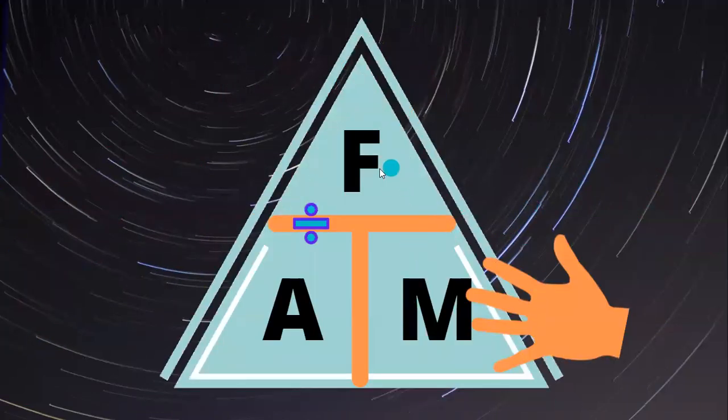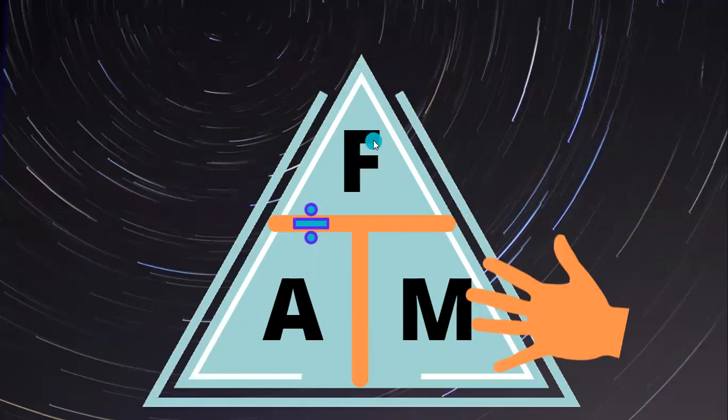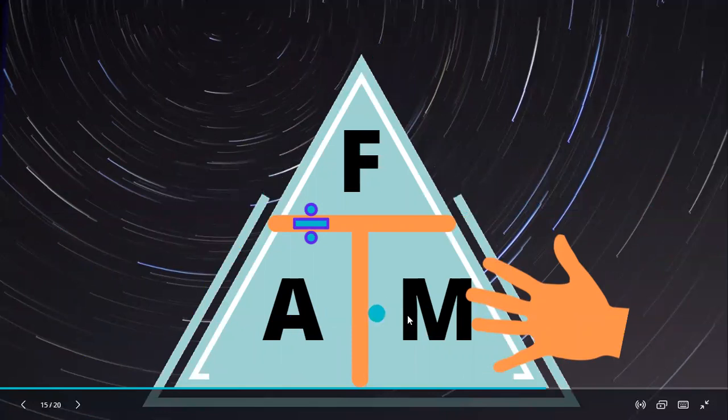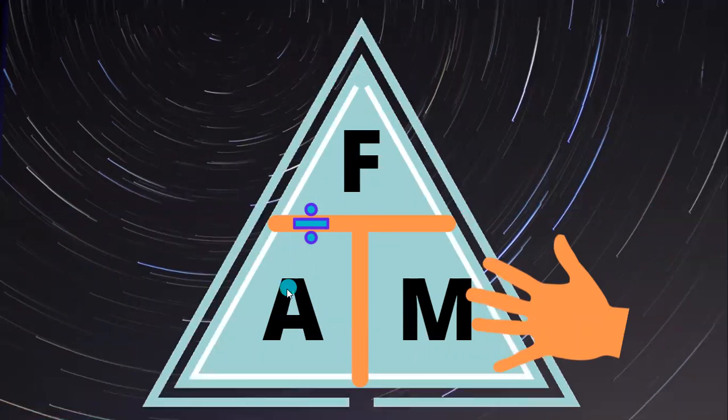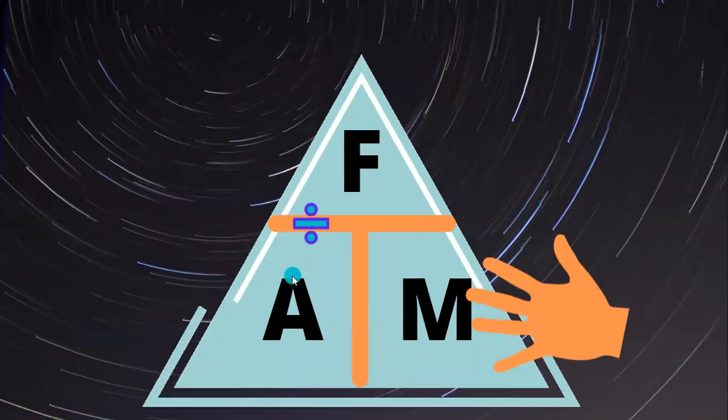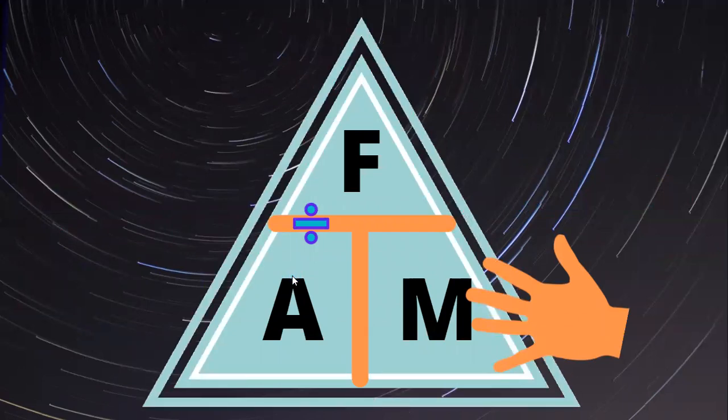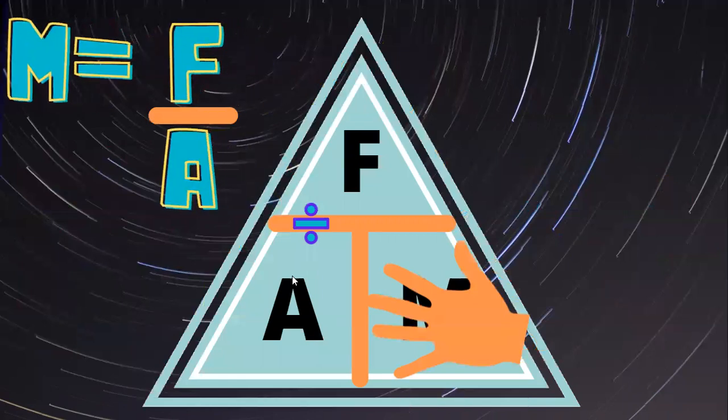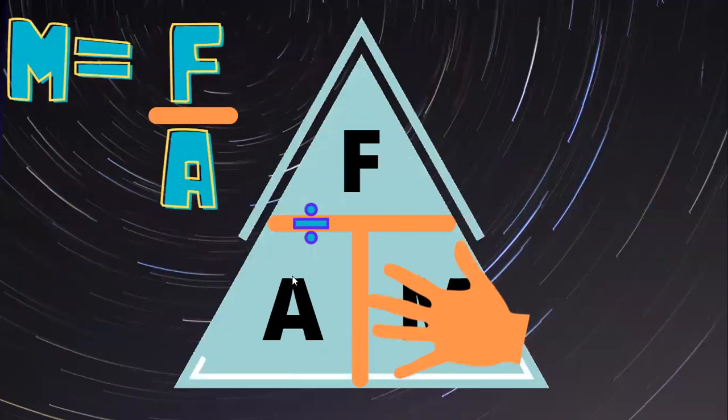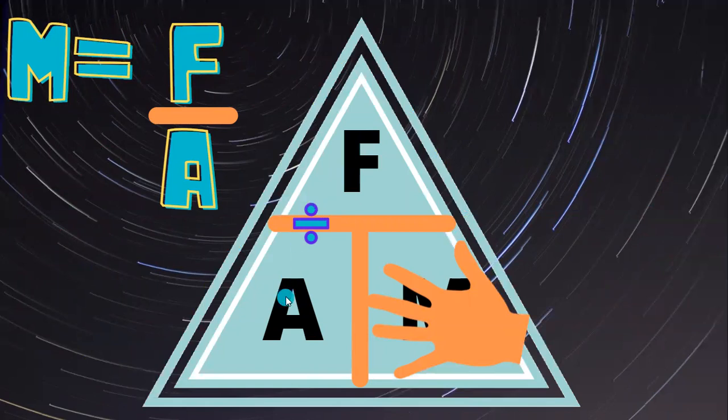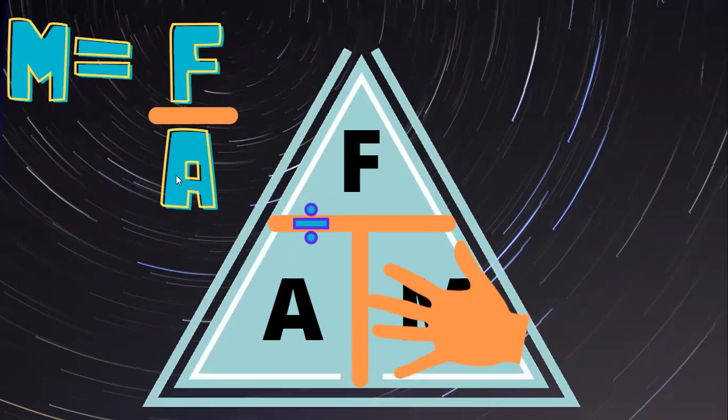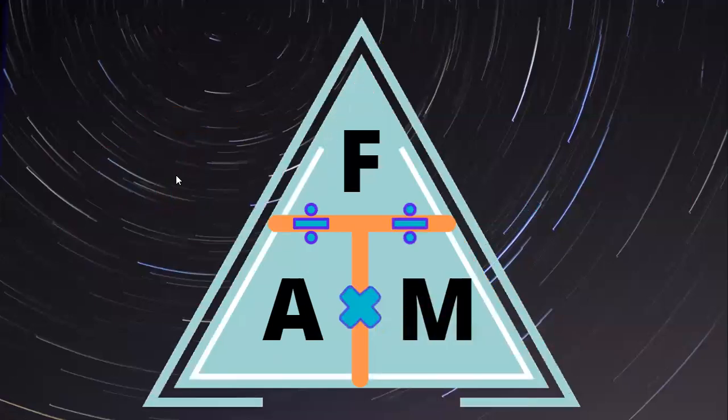So let's go ahead and look at our triangle. Here we have our triangle. And remember when I said, when we have this triangle, F, A, M, force, acceleration, mass, when we go across, we times, but when we go up and down, we divide. So I'm going to go ahead and cover up my M because that's the thing I'm not sure of. That's the thing I don't have. So I cover up my M and I get force divided by acceleration. Mass equals force divided by acceleration.